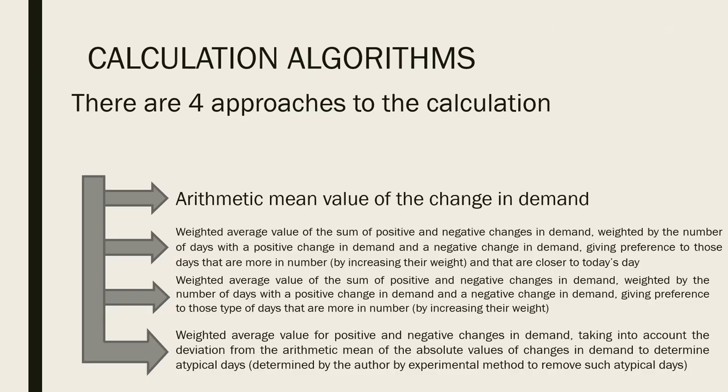Calculation algorithms. There are basically four approaches to the calculation offered in the paper. First one is the most obvious: arithmetic mean value of the change in demand. We calculate change in demand between similar days four weeks ago, arithmetic mean, and then add this arithmetic mean to the actual results of our actual day. For example, if we are forecasting for Friday, we take Thursday results, add this arithmetic mean, and receive forecasted value for Friday.